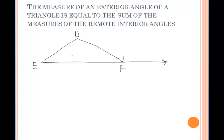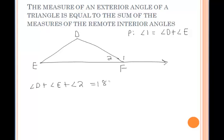Moving on to the proof of why the measure of an exterior angle of a triangle is equal to the sum of the measures of the remote interior angles. I've drawn a triangle with exterior angle 1, and we want to prove that angle 1 is equal to angle D plus angle E, which are the remote interior angles. Based on what we just discussed — all three angles summing to 180 degrees — we can say that angle D plus angle E plus angle 2 equals 180. And since angles 1 and 2 are supplementary, angle 1 plus angle 2 also equals 180 degrees.